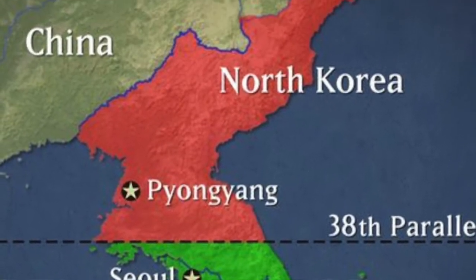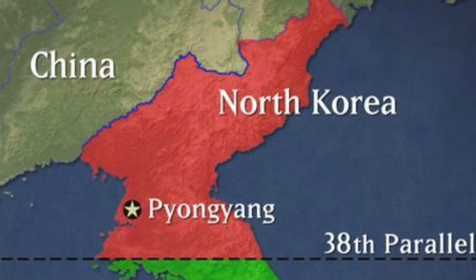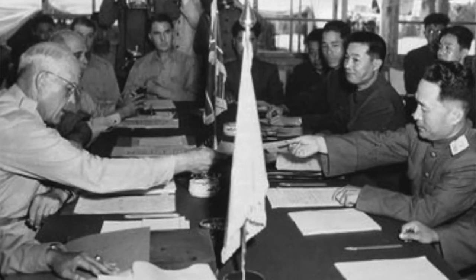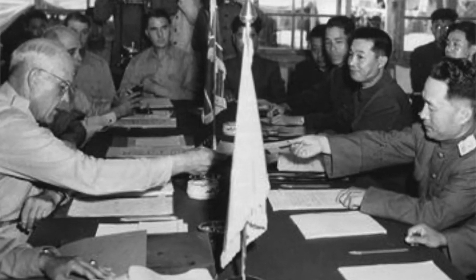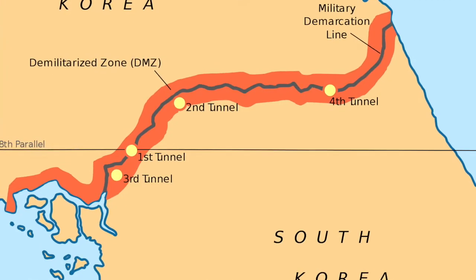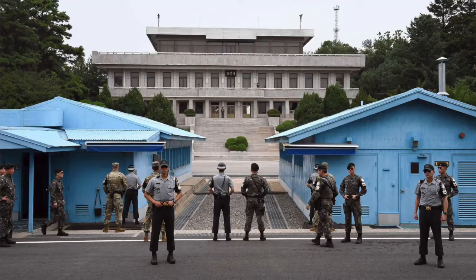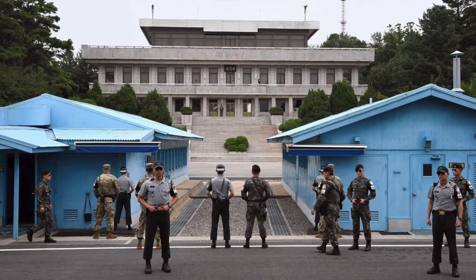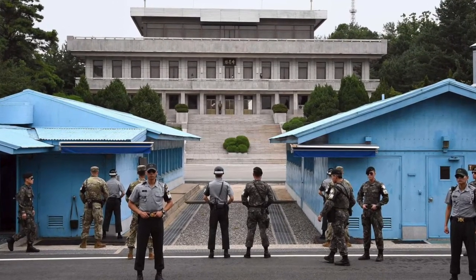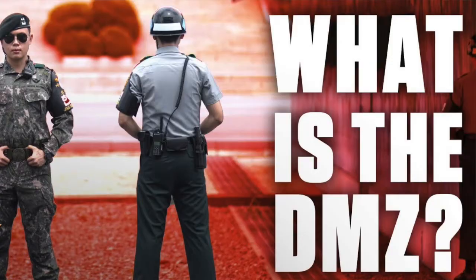Then the peace talks began. Finally, an armistice agreement was signed on July 27, 1953, and a border between North and South Korea — one quite close to the original 38th parallel line — was agreed upon. A demilitarized zone between the two nations was established. Hello, my name is Bill, and this is Jenevra Gryffindora, which is Amanda's dog.